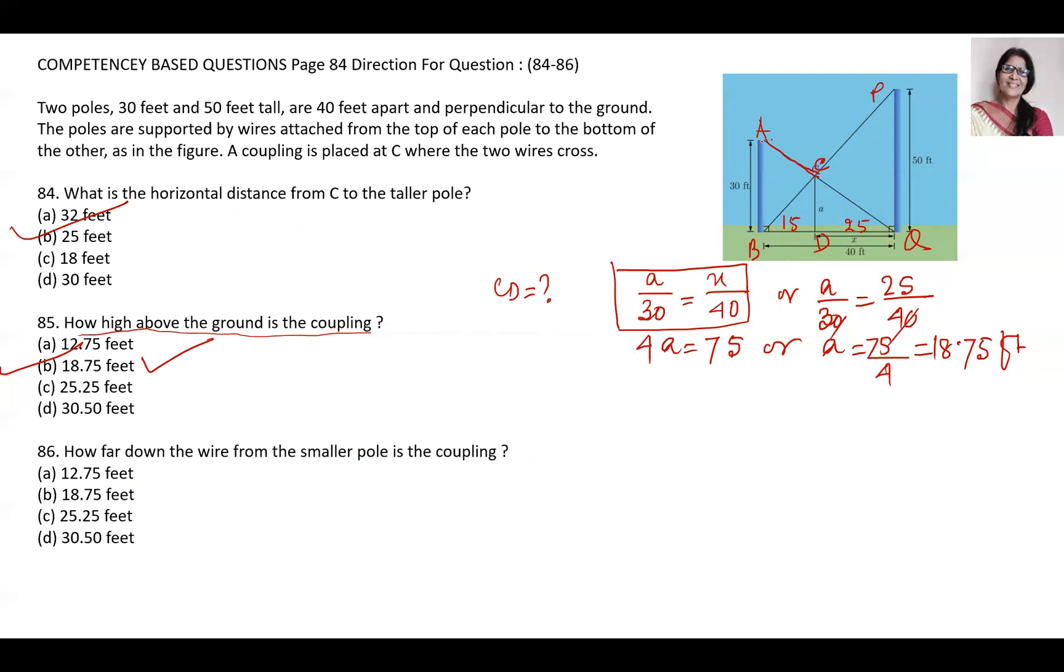First we will take triangle ABQ and find AC. AC squared equals AB squared plus BQ squared. So AC squared will be 30 squared plus 40 squared, that will be 900 plus 1600, that will be 2500. So AC equals the square root of 2500, that will be 50.